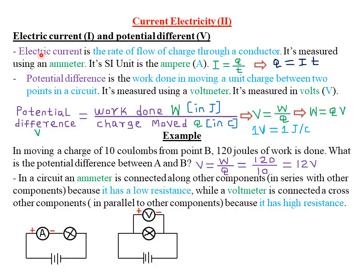In Form 1, under cells and simple circuits, we said that electric current refers to the rate of flow of charge through a conductor. Whenever we talk of rate in mathematics or physics, it simply means we have to put the aspect of time into consideration. Therefore, mathematically, electric current I will be given by the charge divided by time — that is, I = Q/t.